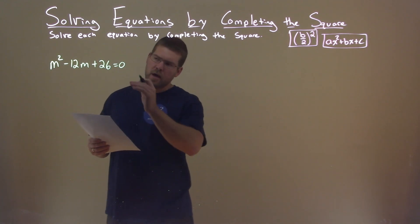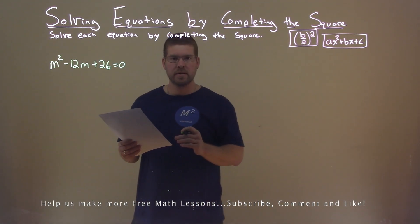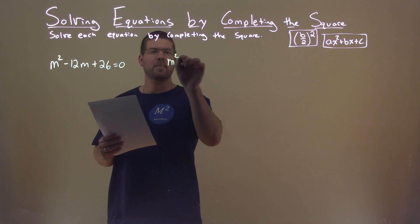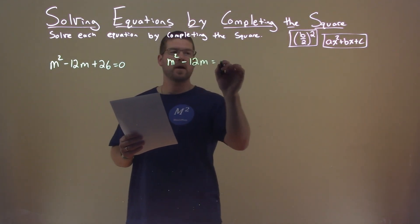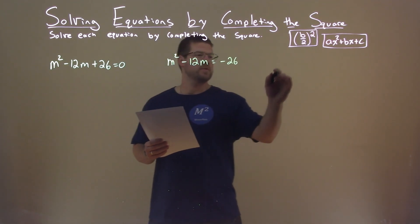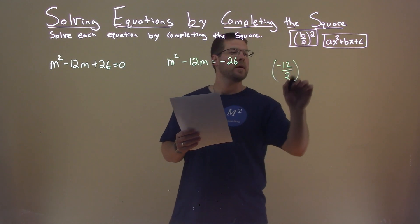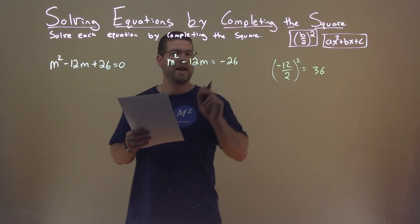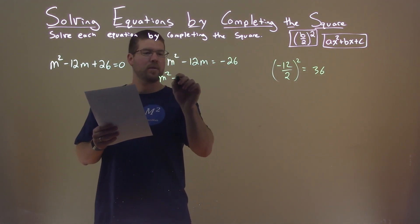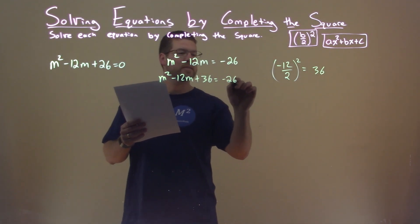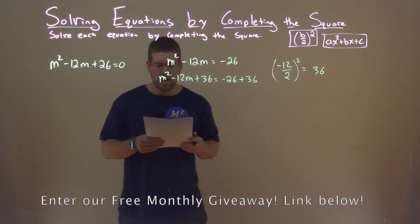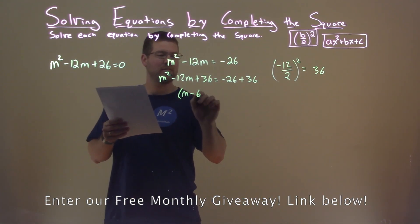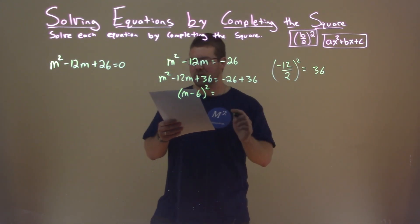We're given this problem right here: M squared minus 12M plus 26 equals 0. We're going to solve this by completing the square. First thing I'm going to do is subtract 26 from both sides, giving me M squared minus 12M equals negative 26. I'm now going to look at my B value, which is negative 12. Dividing by 2 and squaring that comes out to be 36. So I'm going to add 36 to both sides: M squared minus 12M plus 36 equals negative 26 plus 36. The left-hand side is a perfect square — M minus 6 squared — and negative 26 plus 36 is 10.